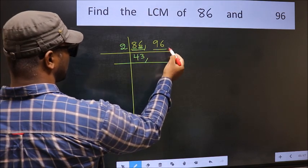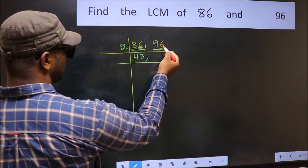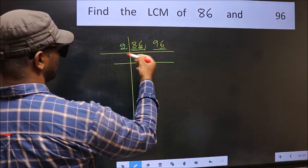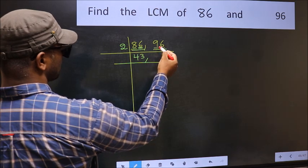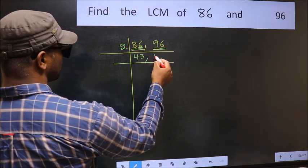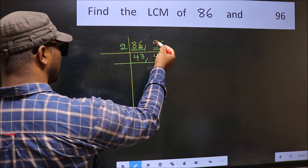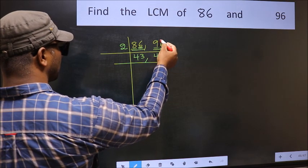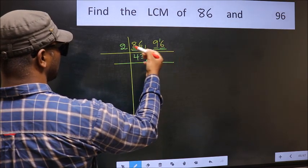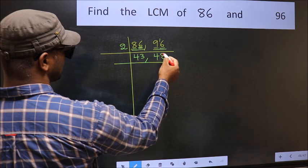The other number, 96, also ends in 6, so it is divisible by 2. For the first digit 9, the closest number in the 2 times table is 2 fours are 8. 9 minus 8 is 1, carried forward; 16 — in the 2 times table, 2 eights are 16. So 96 divided by 2 gives 48.